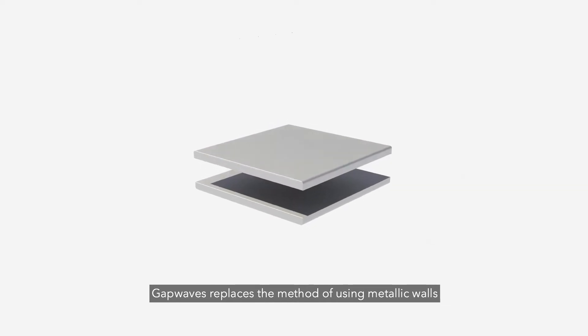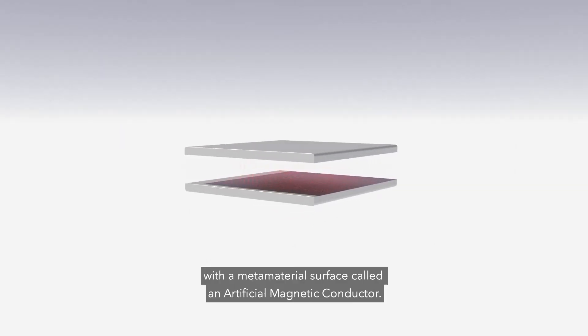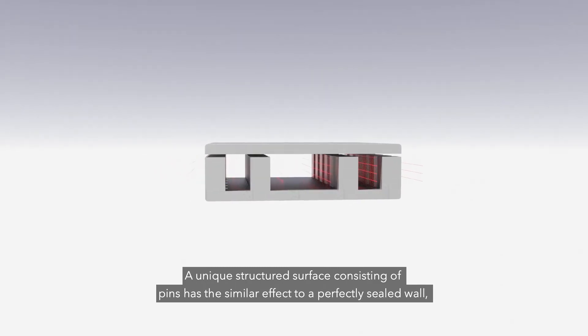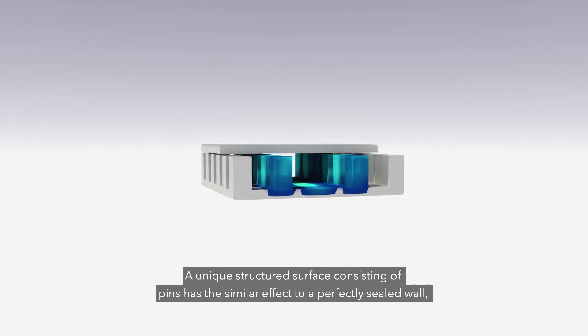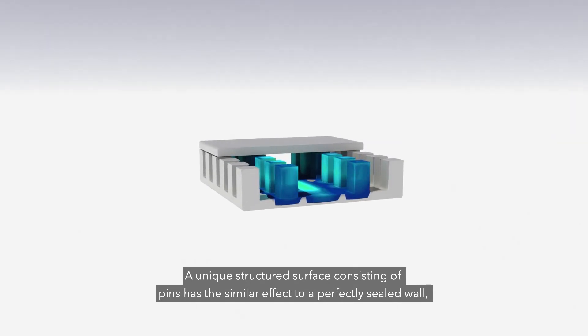Gap Waves replaces the method of using metallic walls with a metamaterial surface called an artificial magnetic conductor. A unique structured surface consisting of pins has a similar effect to a perfectly sealed wall.